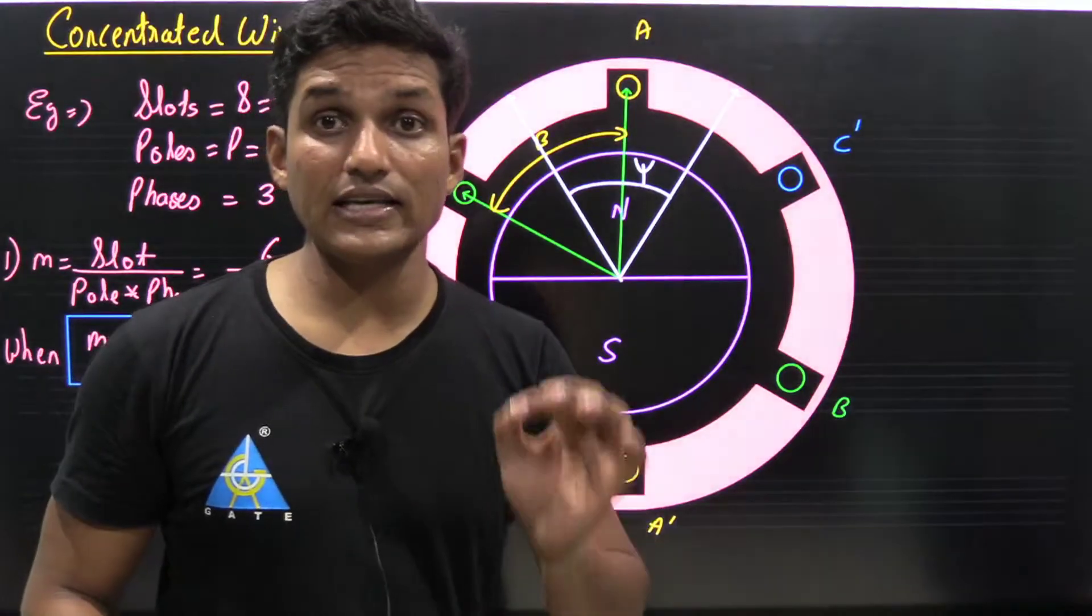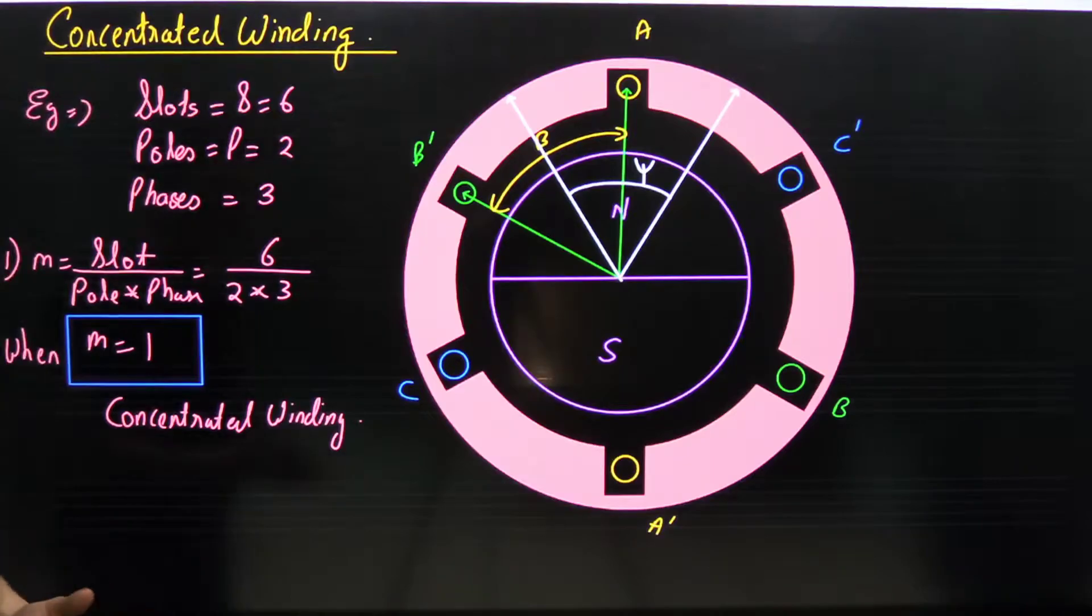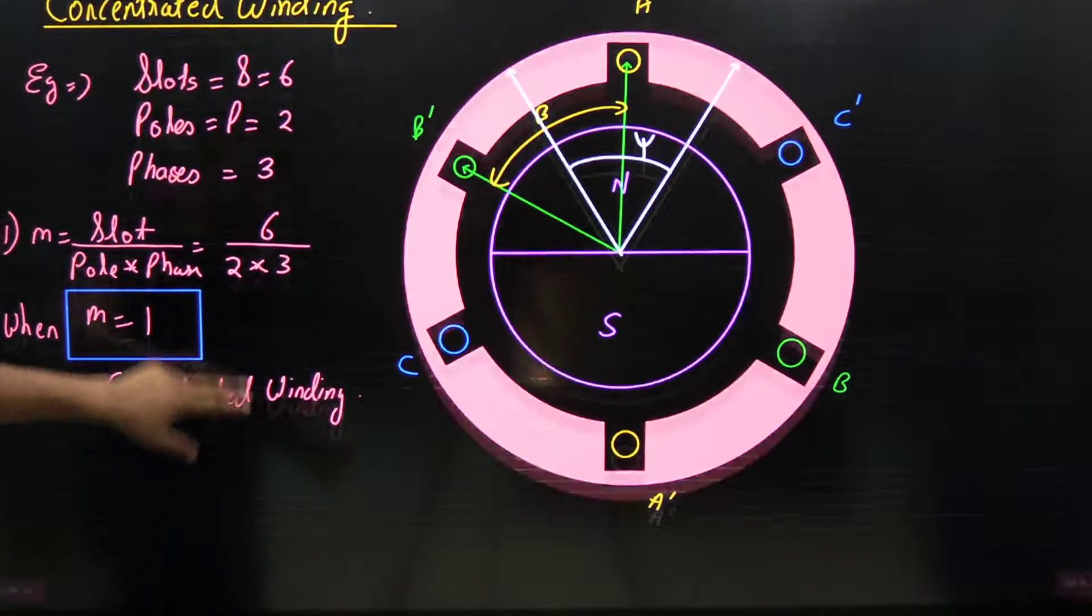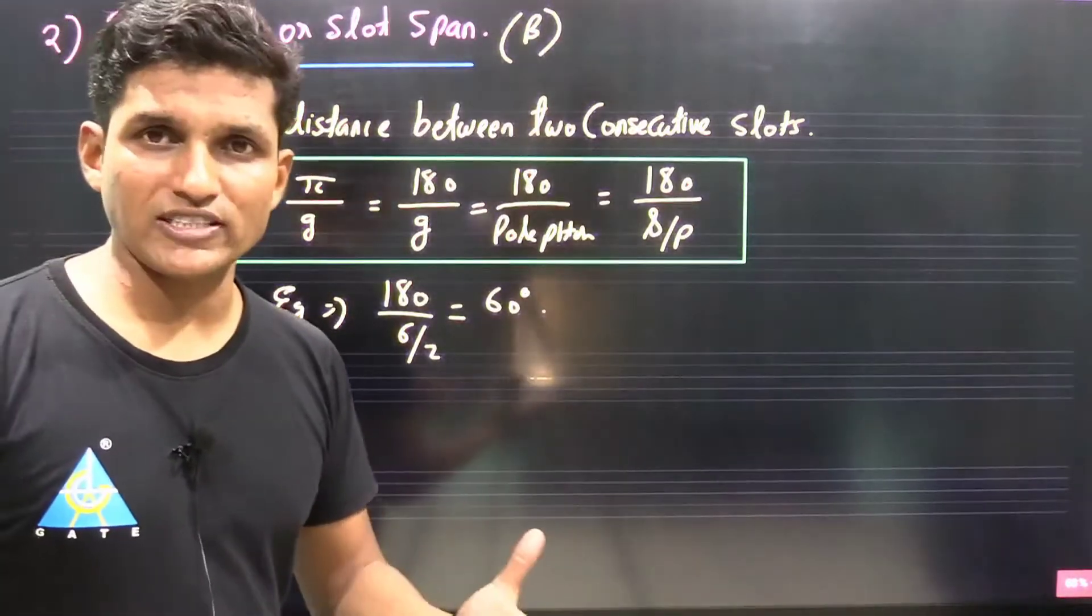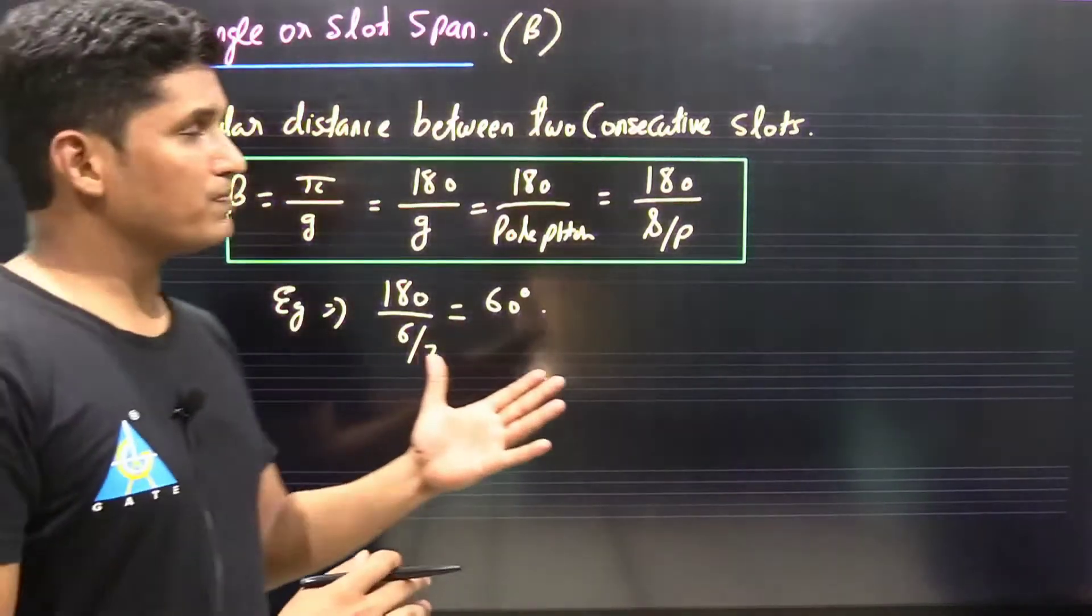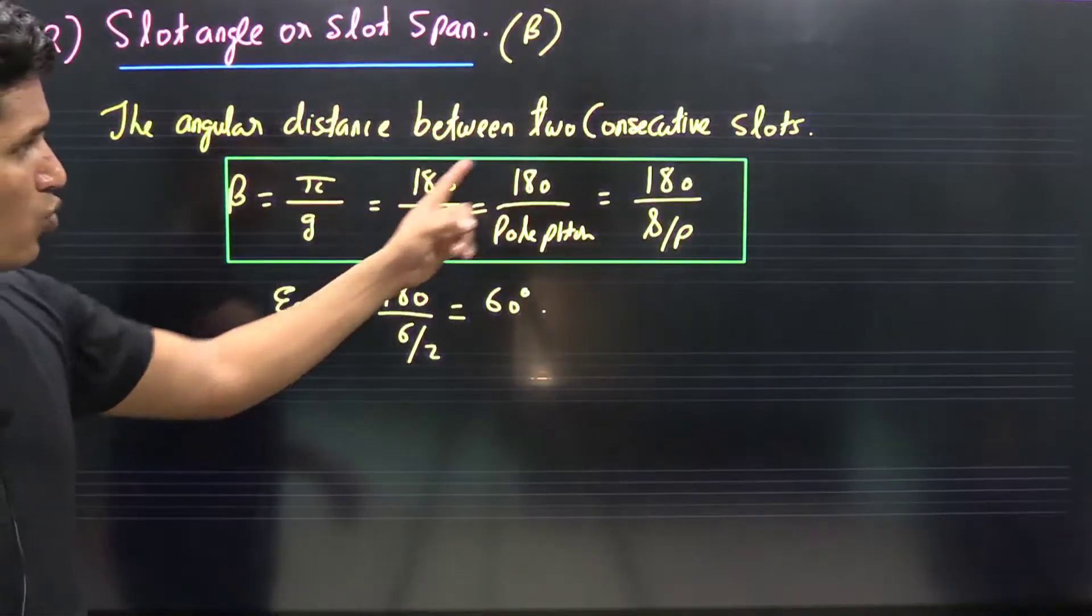Let's also determine other values like beta in this particular example - that is slot angle or slot span. The angular distance between two consecutive slots is beta = 180 upon pole pitch = 180 upon slot per pole.